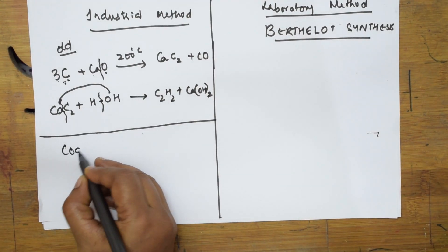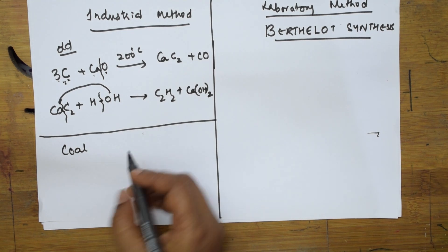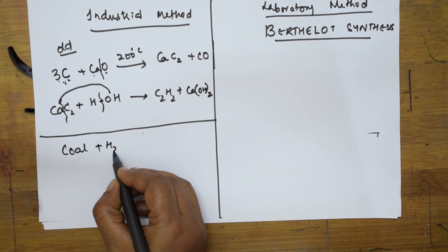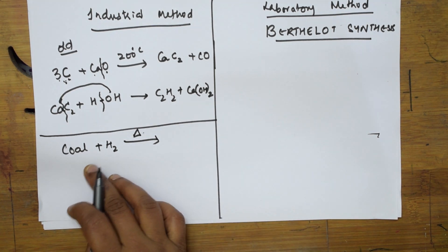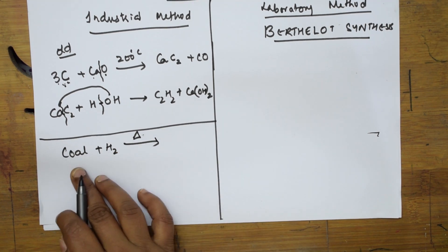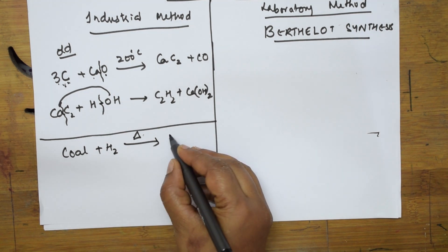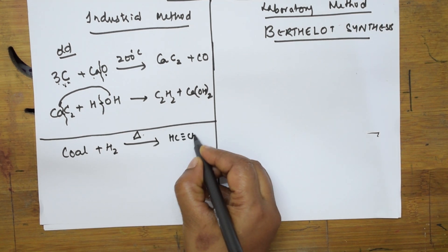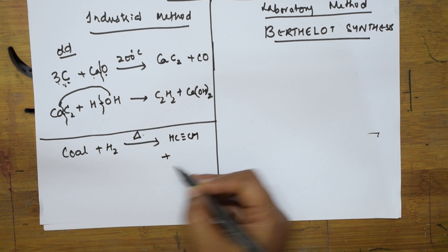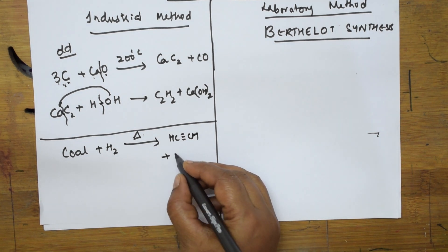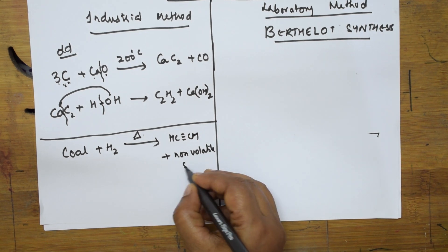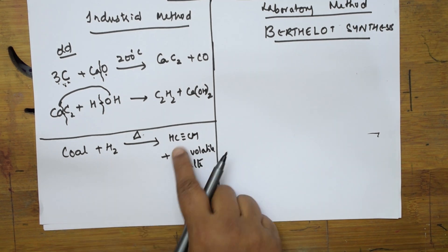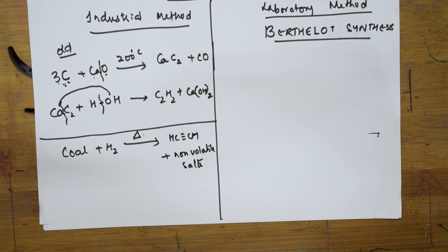There is one more method of preparation. In this second method, they take coal — like coke — and perform hydrogenation by adding hydrogen and heating it. During this process the coal gets converted into hydrocarbons, that is acetylene. Non-volatile salts deposit elsewhere and only acetylene is collected.